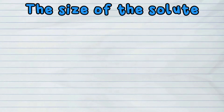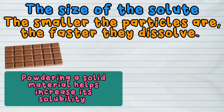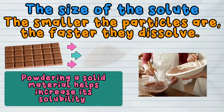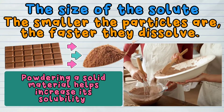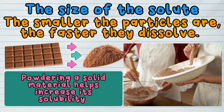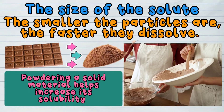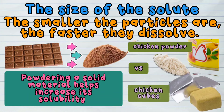The size of the solute also affects its solubility. The smaller the particles are, the faster they dissolve. Powdering a solid material helps increase its solubility, because the small solid particles come in contact with the liquid particles faster. For example, chicken powder dissolves more easily in water compared with chicken cubes.